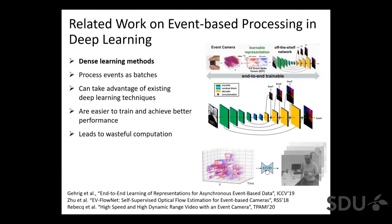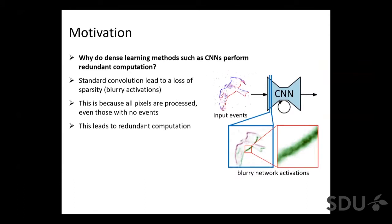Let's start with illustrating why dense learning methods such as CNNs perform redundant computation. A standard CNN-based approach works by aggregating events into representations which are spatially sparse, as you can see here in the bird diagram. This is followed by a sequence of convolutions, down samplings, and non-linearities. While the input of the network is actually spatially sparse, due to the convolution operation intermediate network activations become blurry and this leads to a loss of sparsity. This is because the convolution operation processes all pixels in the input, including those that did not trigger events or are noisy, although these pixels carry very little information or no information at all. As a result, standard convolutions lead to redundant computation.